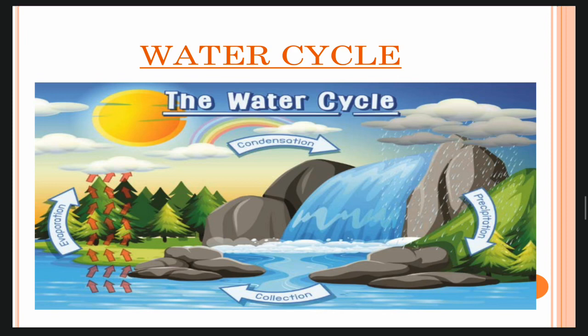When these tiny droplets along with dust particles cool down, they further form clouds. These water droplets come down as rain on land and water bodies. The whole process is called a water cycle.